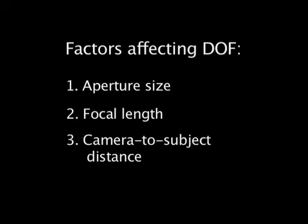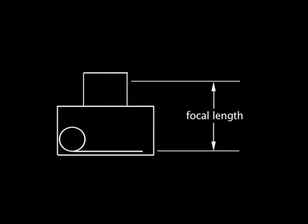The focal length of a lens is the second factor that affects depth of field. The focal length of a lens is essentially a measurement of how strongly it focuses or converges light. The actual focal length distance is measured from the optical center of a lens, or lens system, to the focusing plane, while the lens is focused at infinity.